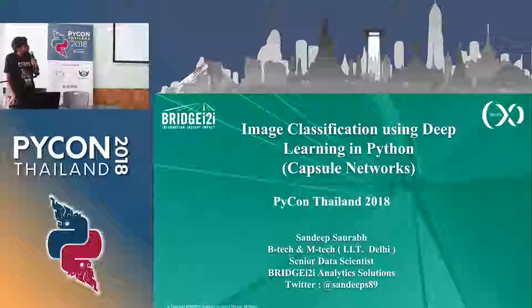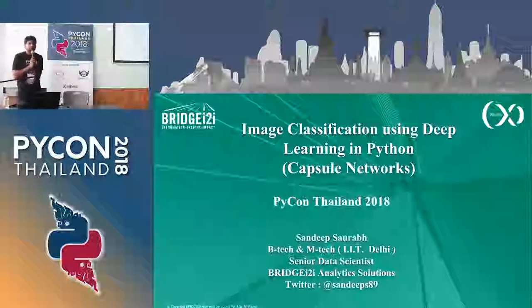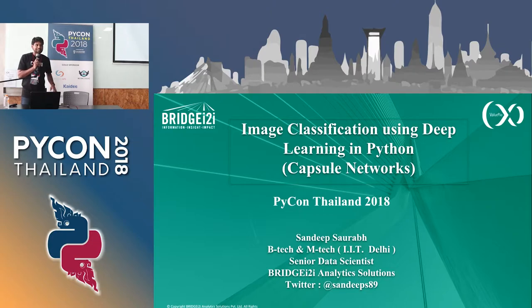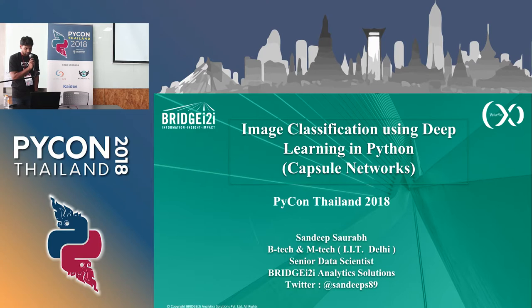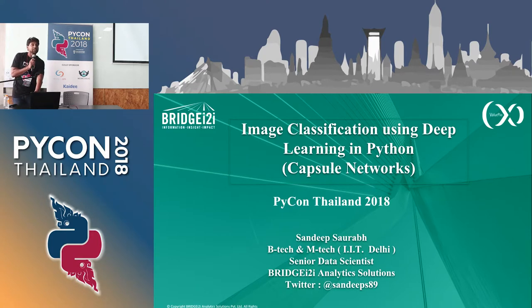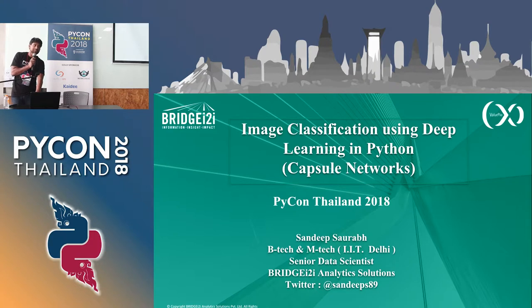Coming to the topic, today I want to give an overview — without going into the details of the mathematics — of how image classification actually changed the way we see AI in the current scenario. The topic is image classification using deep learning, specifically focused on capsule networks.